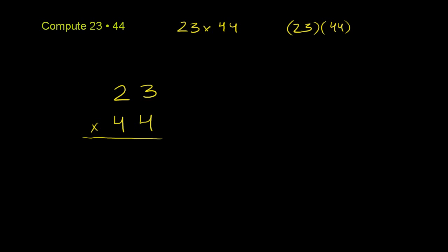Let's start off multiplying this 4 in the 1's place times 23. So you have 3 times 4 is 12. We can write 2 in the 1's place, but then we want to carry the 1, or we want to regroup that 1 in the 10's place. So it's 12, so you put the 1 over here. And now you have 4 times 2 is 8, plus 1 is 9.